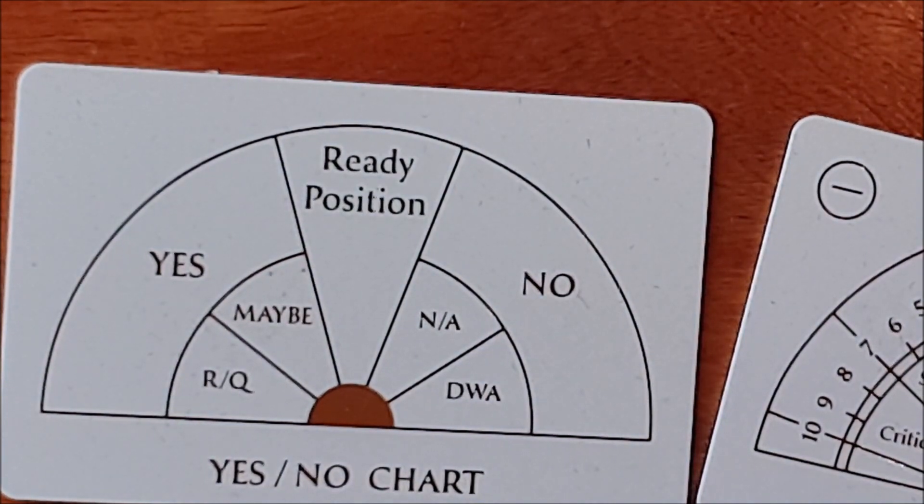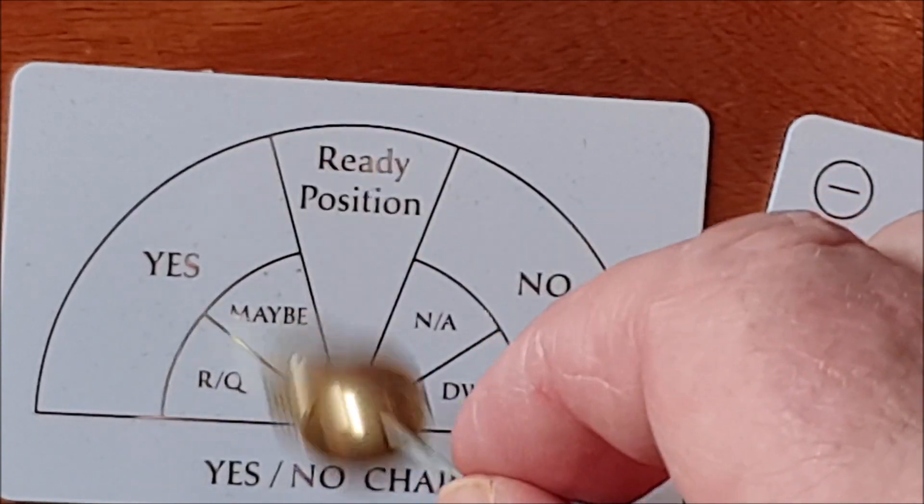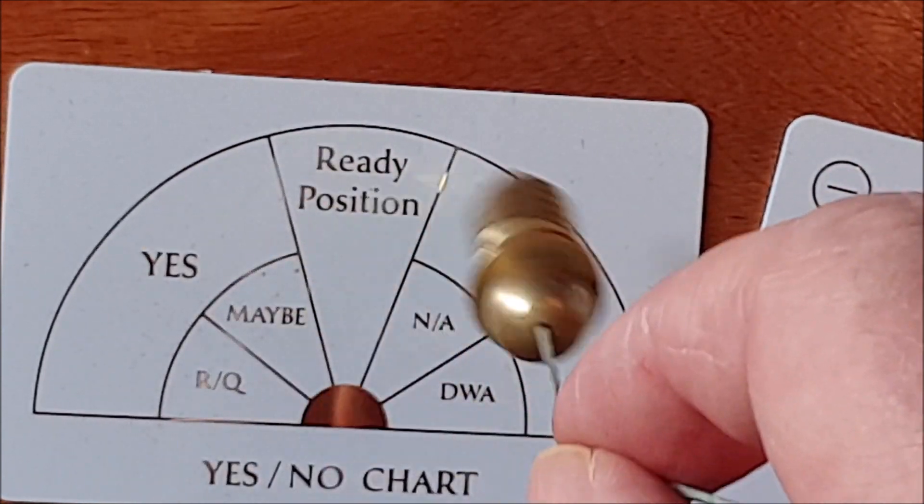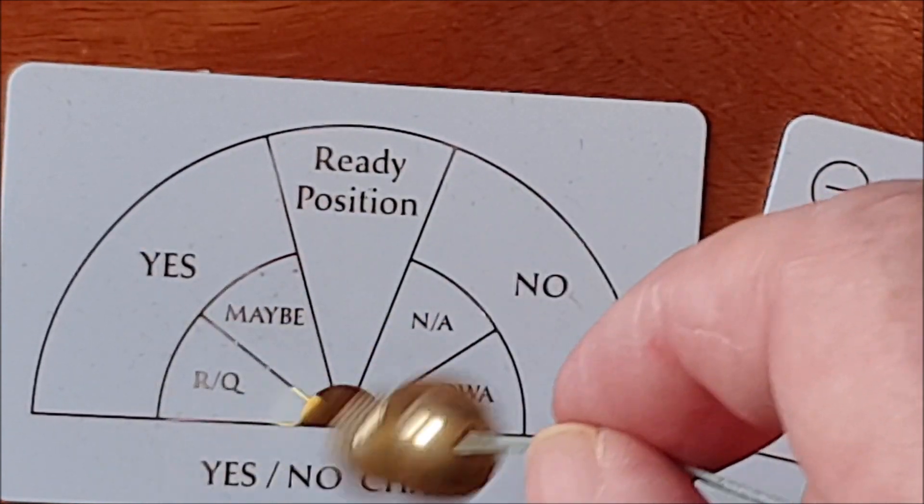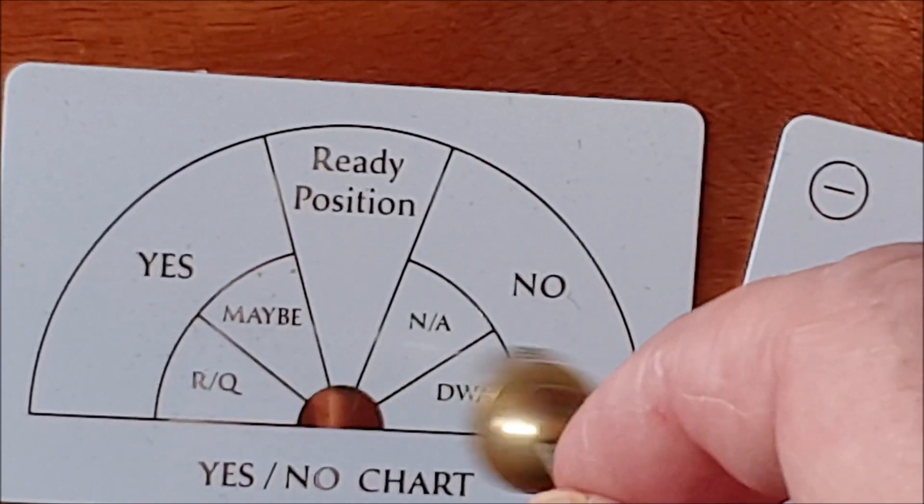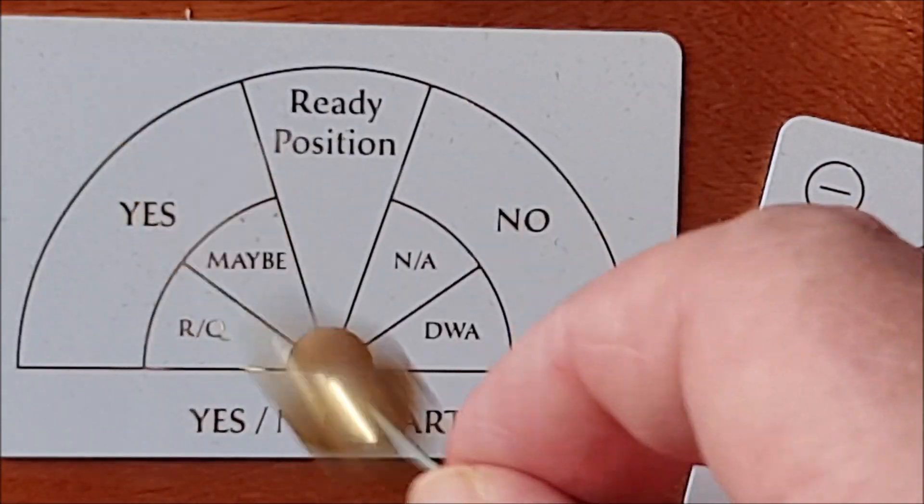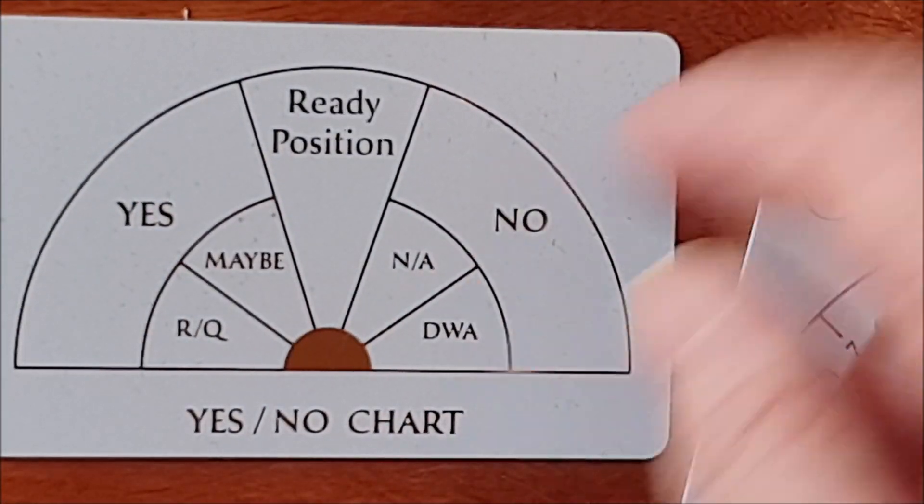Here's another version, this is a very basic one. Your pendulum is in the ready position. If you ask it for yes it goes to this side, if you ask for no it goes to this side. And you can have don't want to answer, no answer, maybe, and repeat the question.